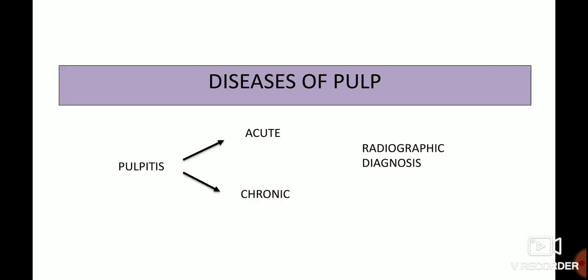Let me give a brief introduction about the diseases of the pulp. For pulpitis, whether acute or chronic, it does not have a radiographic diagnosis because pulpitis is an inflammation of the pulp and we cannot see the inflammation on a radiograph.